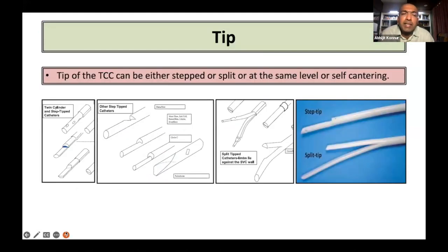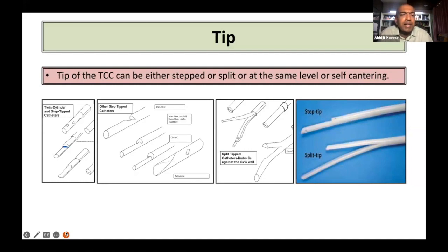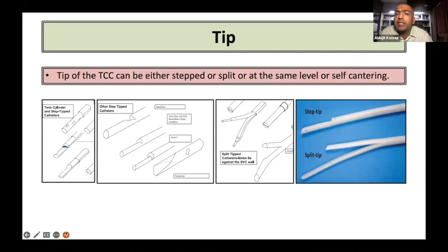The tip of the tunnel catheter can either be stepped or split, or at the same level, or self-centering. Depending on this, various types of catheters are manufactured. Studies or evidence at this point in time does not give any superiority or non-inferiority to any catheter based on the tip configuration.